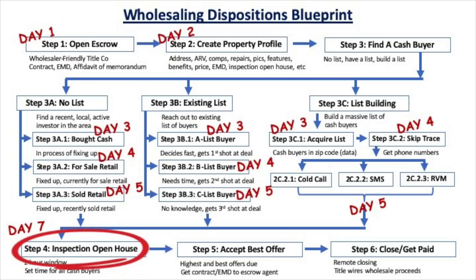Whichever method you use, once you have interested cash buyers, most of the time they're going to need access to the property. This takes us to step four, which happens on day seven. I call this an inspection open house — a two-hour window where all of your interested buyers can visit the property. Make sure to tell all interested parties that this is the only time to see the property and to bring their partners, contractors, et cetera, because there won't be another opportunity. This creates an auction environment — you want them all there at the same time to create urgency. Even though you've given your asking price, instruct all interested buyers to submit their highest and best offer by the following day at 2 p.m.